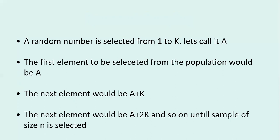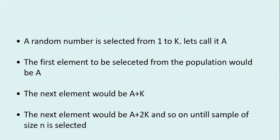Suppose I select 5 as my random starting number. From my arranged list of 1 to 20 shops, I could select any shop — I selected the 5th shop. I denote this as 'A'. So my first element is the 5th shop.